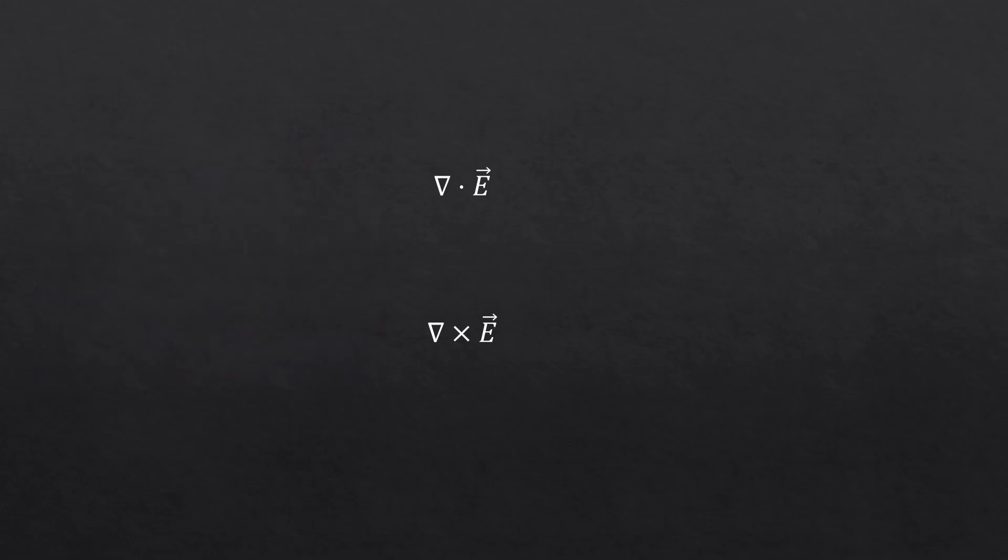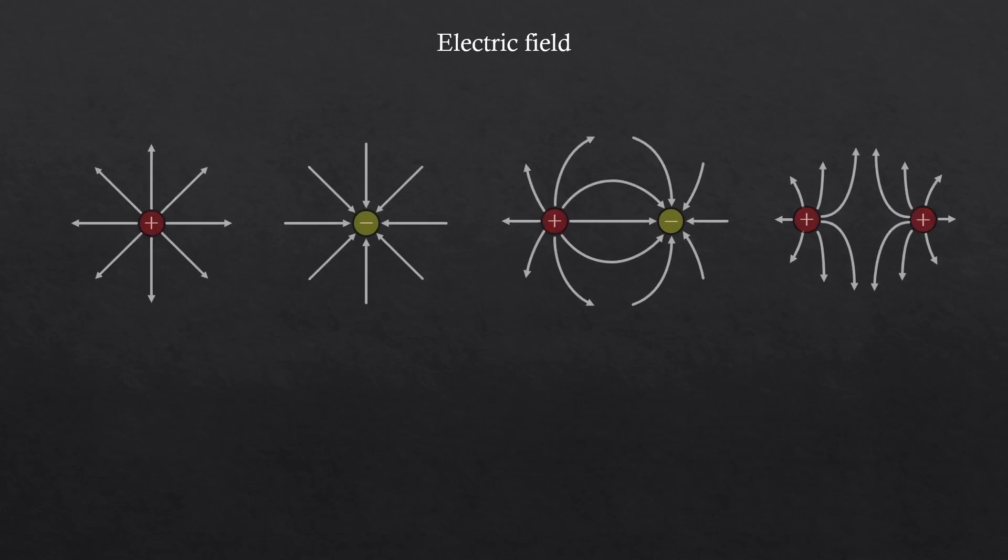We have learned that electric fields spread. Now the question is, can they also rotate? When we think about different situations involving electric fields, we can roughly categorize them like this. So let's look at the first one. Is the electric field rotating? No, it's just spreading out. What about the second one? Not rotating either. So far, it seems like the curl of the electric field is just zero.